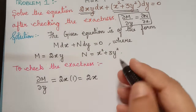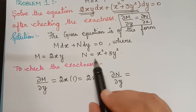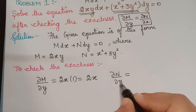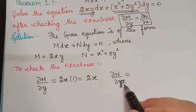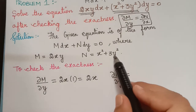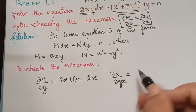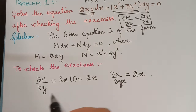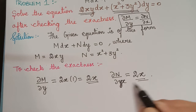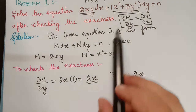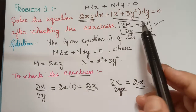Next, we find ∂N/∂x, which is the differentiation of N partially with respect to x, treating y as constant. The 3y squared term is constant and differentiates to 0. The differentiation of x squared gives 2x. So ∂M/∂y equals 2x and ∂N/∂x equals 2x, which means the given equation is an exact equation because this condition is satisfied.